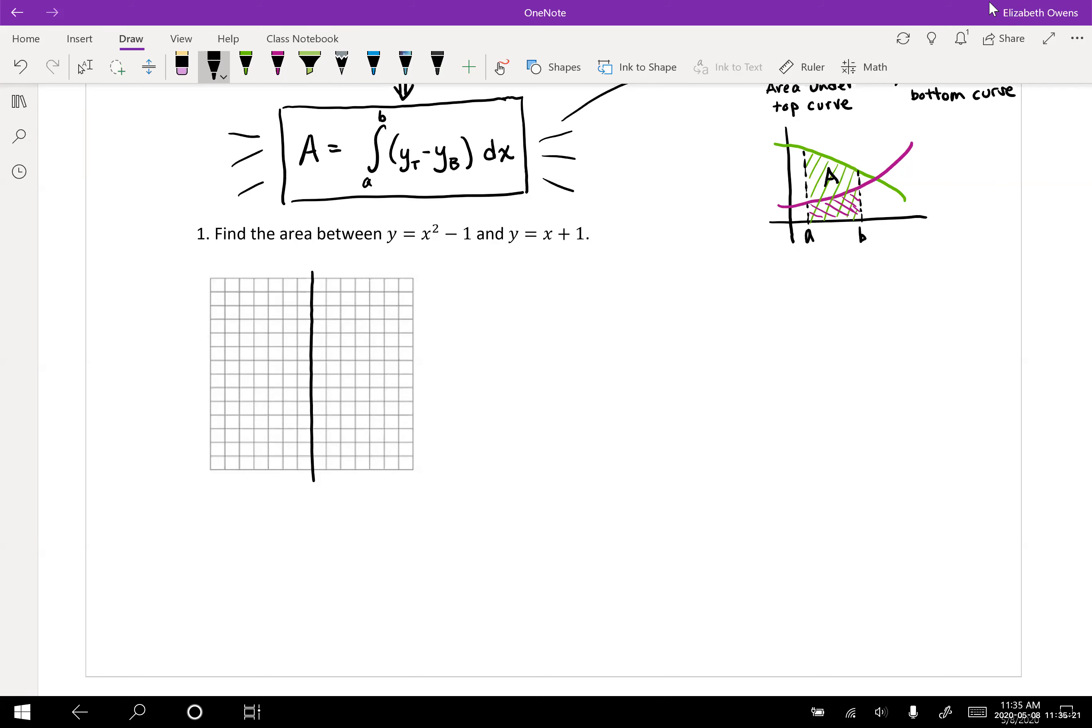Set up some axes. One of these graphs, x squared minus one, is going to be a parabola with a vertex down here at zero negative one. It's like your standard x squared parabola that's been moved down one unit. I'm going to make two boxes be one unit on my graph here.